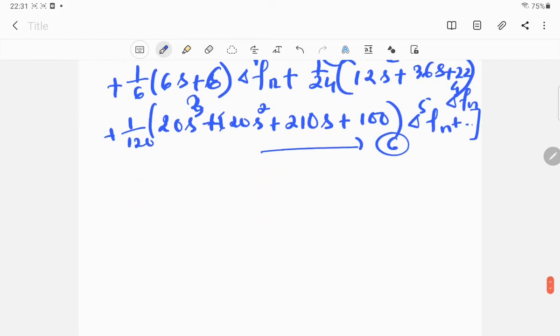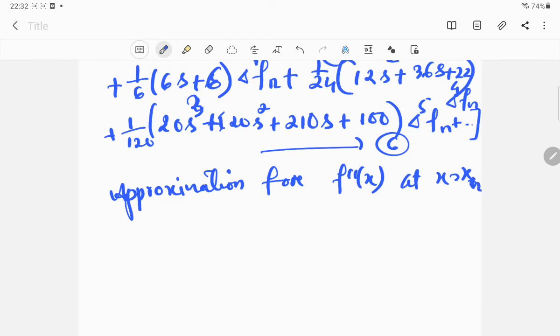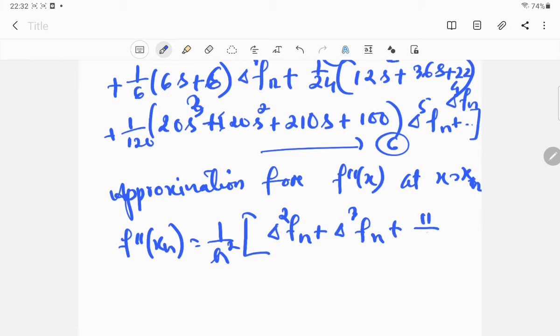In the same way you can find out approximation for f double dash x at x equal to x_n. That will be f double dash x_n, and that will also be something like one by h square. It is already given in the notes. You can check whether the facts or the terms that are written there are correct or not. If you find any mistake, just let me know. I will surely do the correction in the notes.